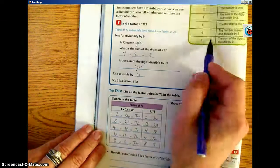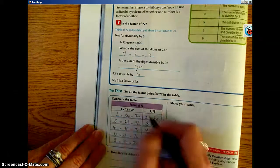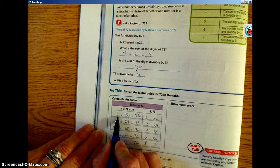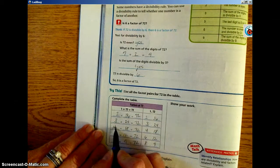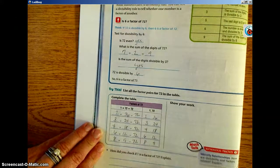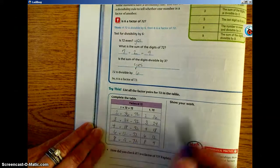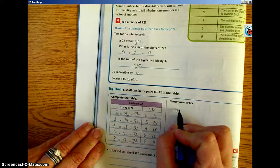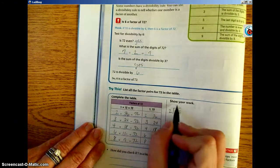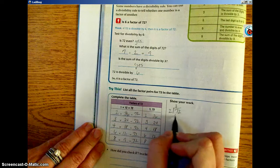Using the divisibility rules, try this and see if you can determine, is 2 going to work, is 3 going to work, is 4 going to work. You can also actually do division. So I could actually take 72 divide by 2. 2 goes into 7, 3 times. 3 times 2 is 6. 7 minus 6 is 1. Bring down my 2.